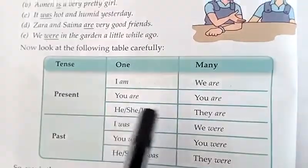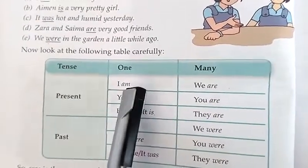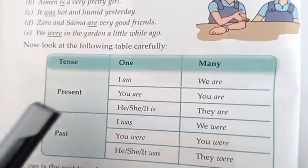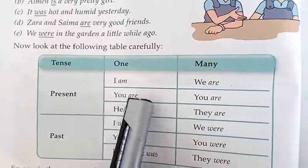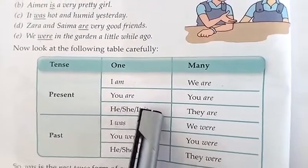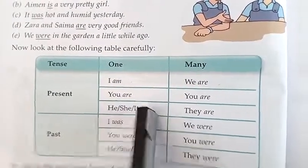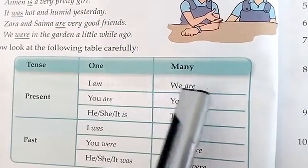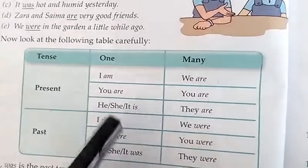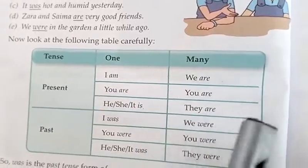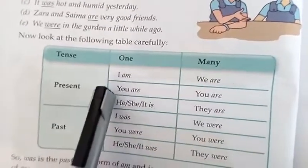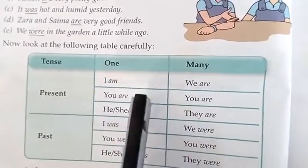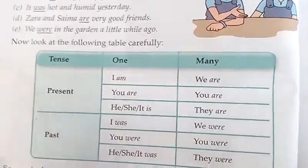Present tense میں: I کے ساتھ am لگے گا۔ He, she, it کے ساتھ is لگے گا۔ Many چیزیں ہوں تو ان کے ساتھ are لگتا ہے۔ We کے ساتھ are، you کے ساتھ are — one time بھی اور many میں بھی — اور they کے ساتھ بھی are لگے گا۔